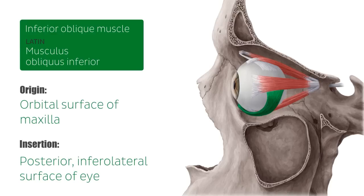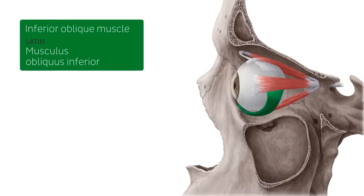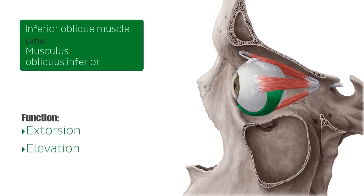The inferior oblique's point of insertion is covered by the lateral rectus muscle, as you can see here. When the eye is in a neutral position, the inferior oblique is responsible for extortion, which is rotation of the eye outwards, elevation, which is movement of the eye superiorly, and abduction, which is movement of the eye laterally, away from the nose.